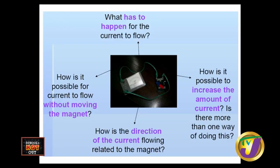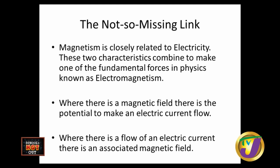What has to happen for a current to flow? Is it possible to increase the current? How is it possible for the current to flow without the magnet moving? And how is the direction of the current related to the magnet? Magnetism is closely related to electricity — these two characteristics combine to make one of the fundamental forces in physics known as electromagnetism. Where there's a magnetic field, there's a potential to make an electric current flow, and a magnetic field can generate a current.